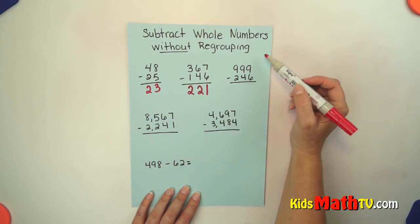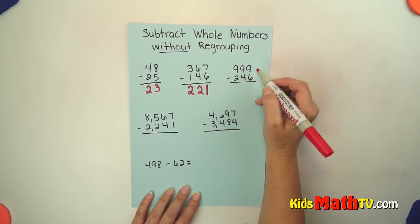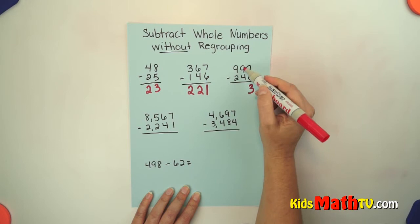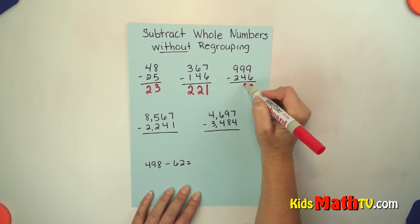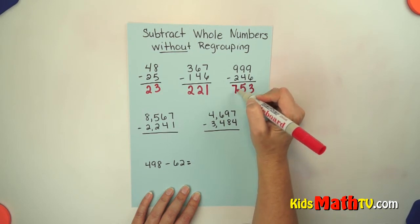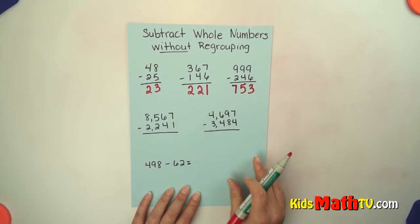We have 999 subtract 246. Again start in the ones place. 9 minus 6 is 3. 9 minus 4 is 5. And 9 minus 2 is 7. And our answer is 753.